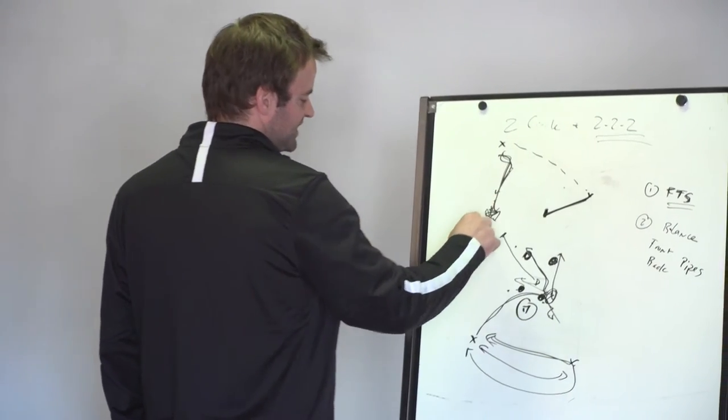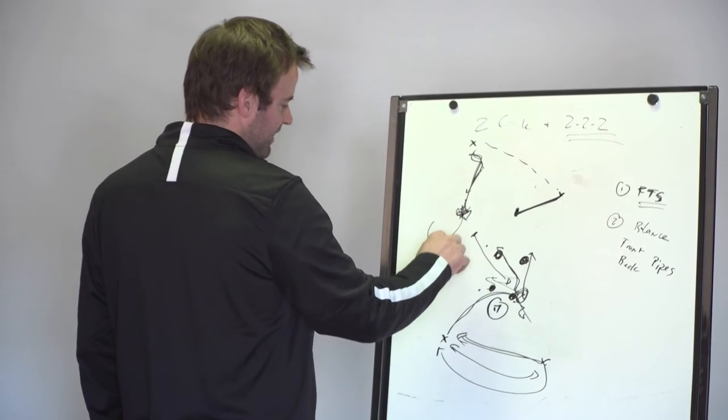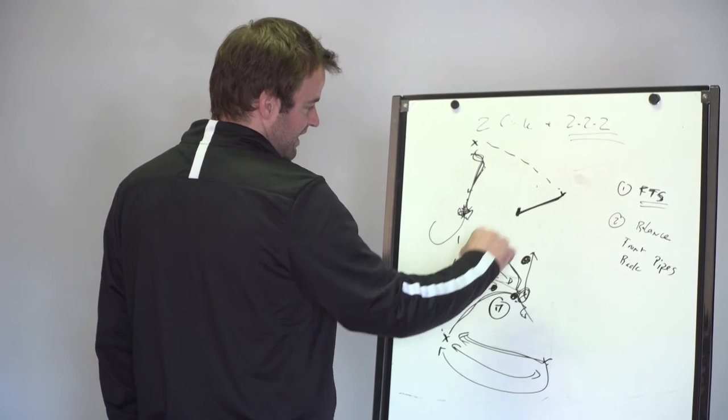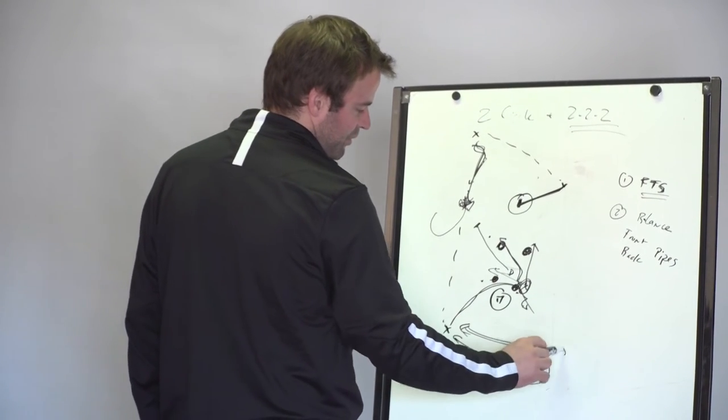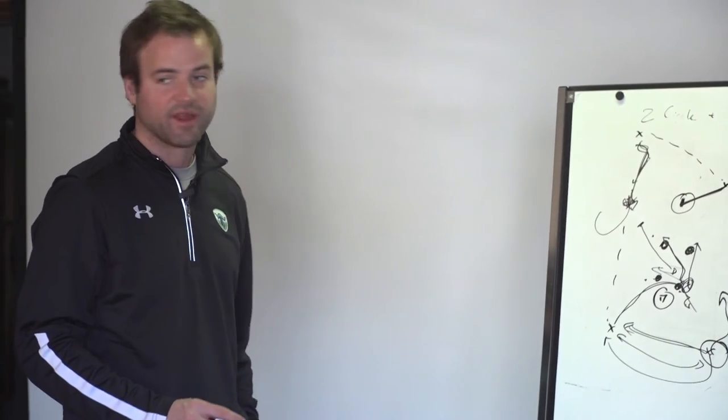On this dodge, nice thing is obviously we have an outlet in front. We also can roll away from pressure. We've got an outlet behind. If we throw in front, we've got this inside look to the crease. If not, we've got this skip right here. If that's not open, we're banging it across. And then this is a great opportunity to re-dodge with all that space.